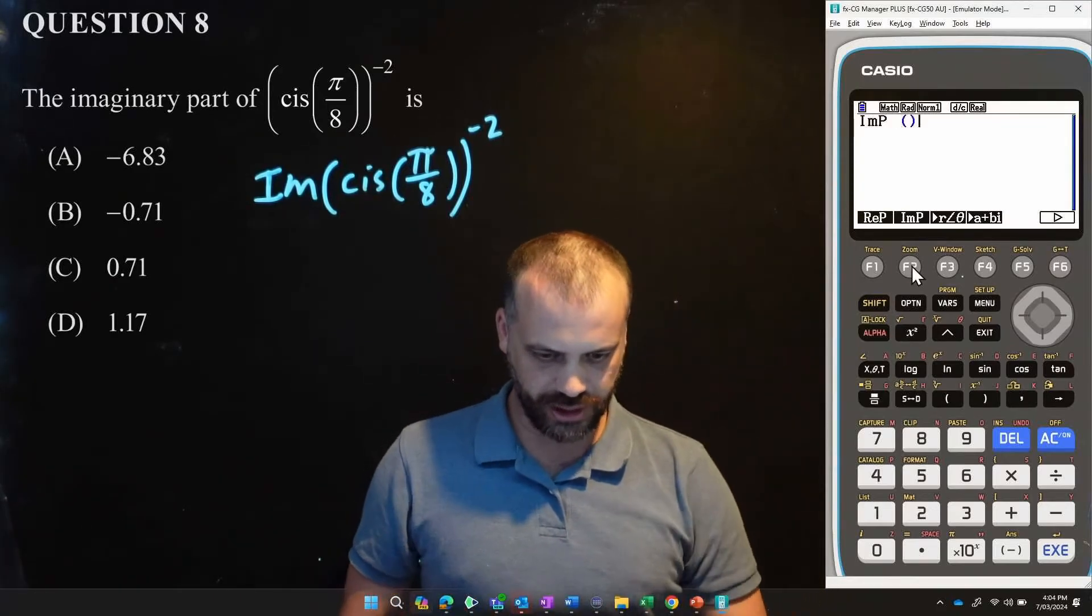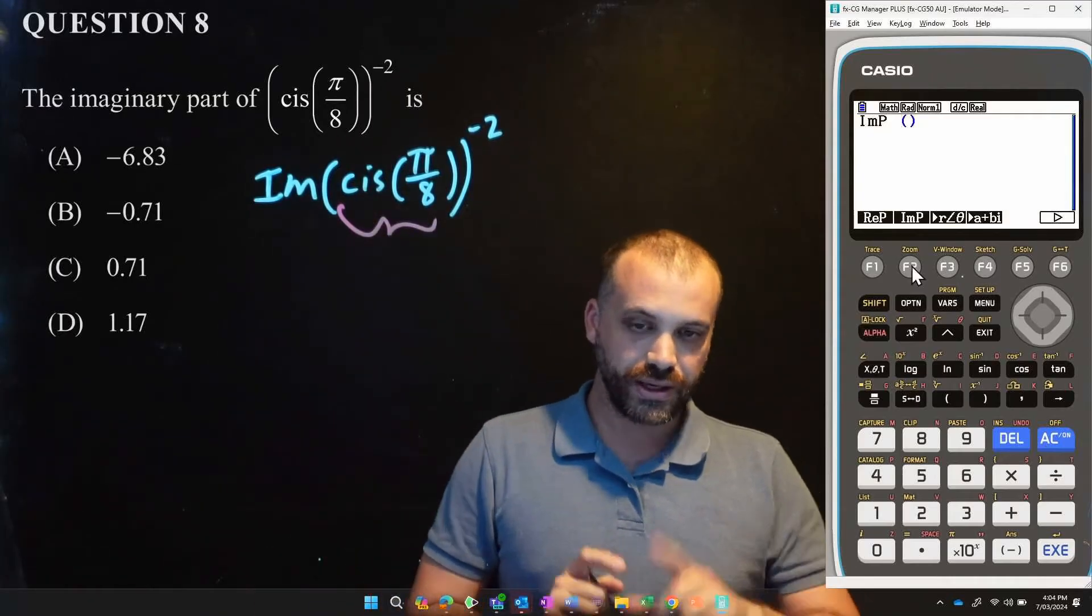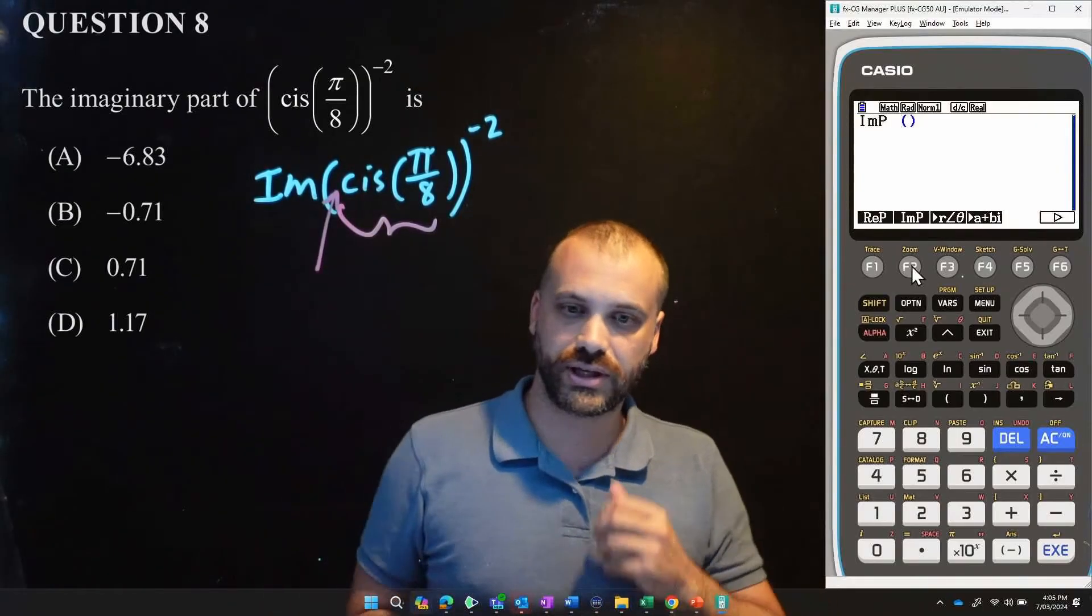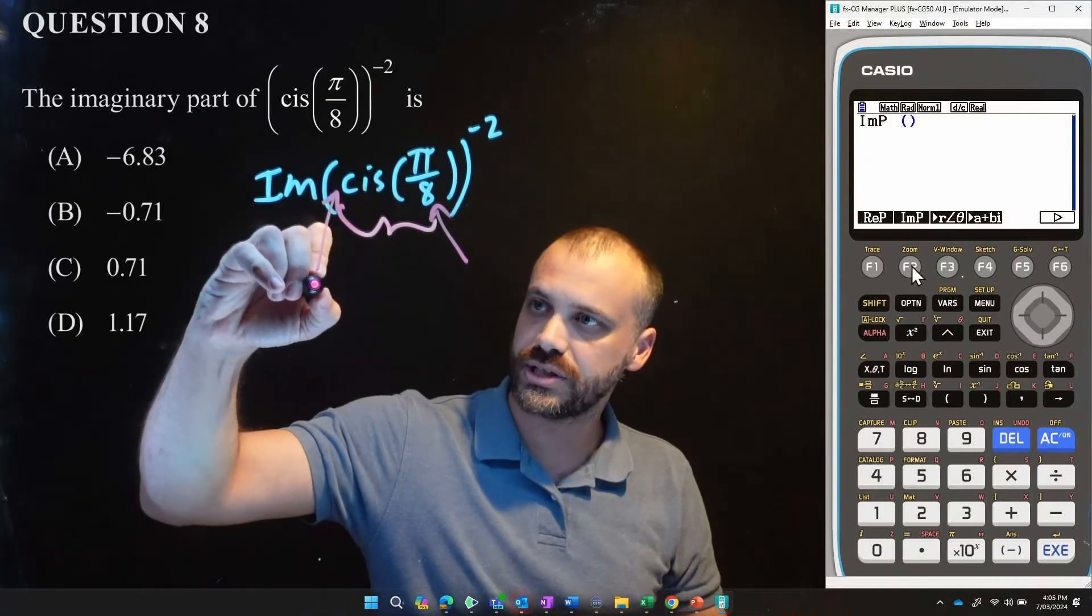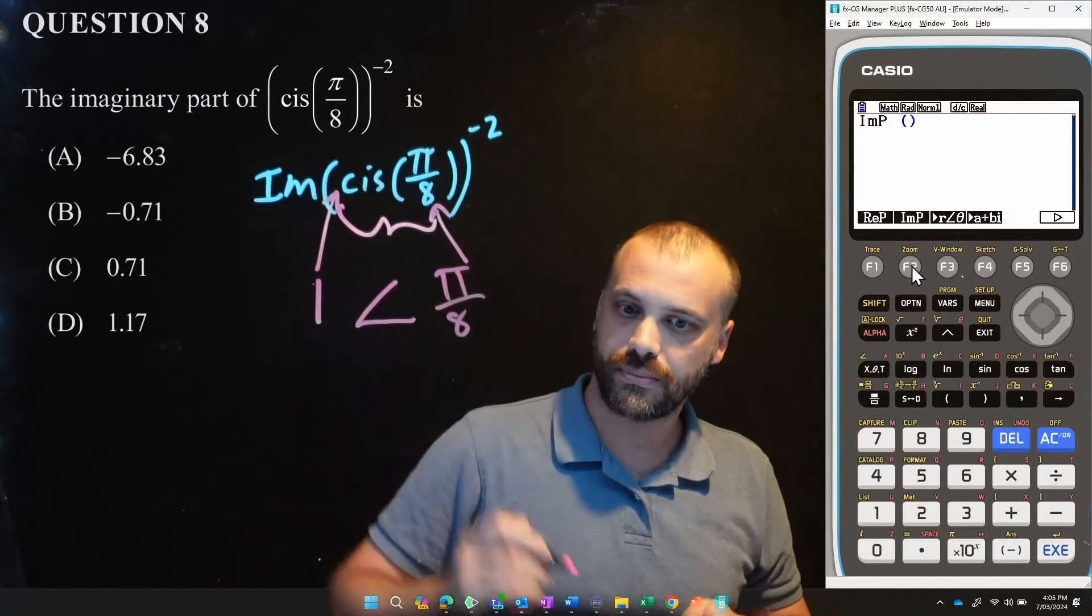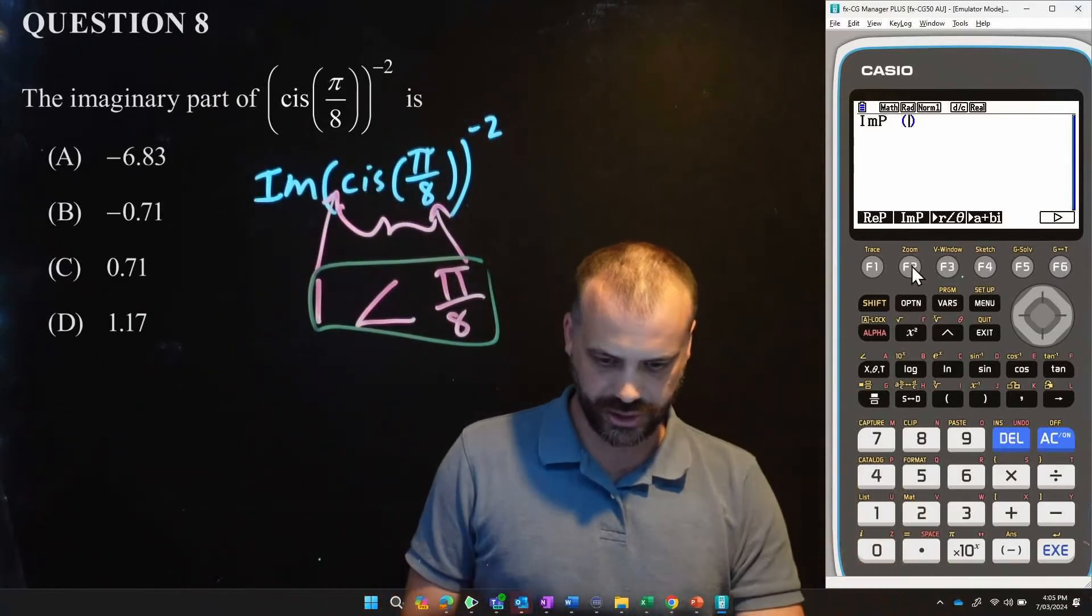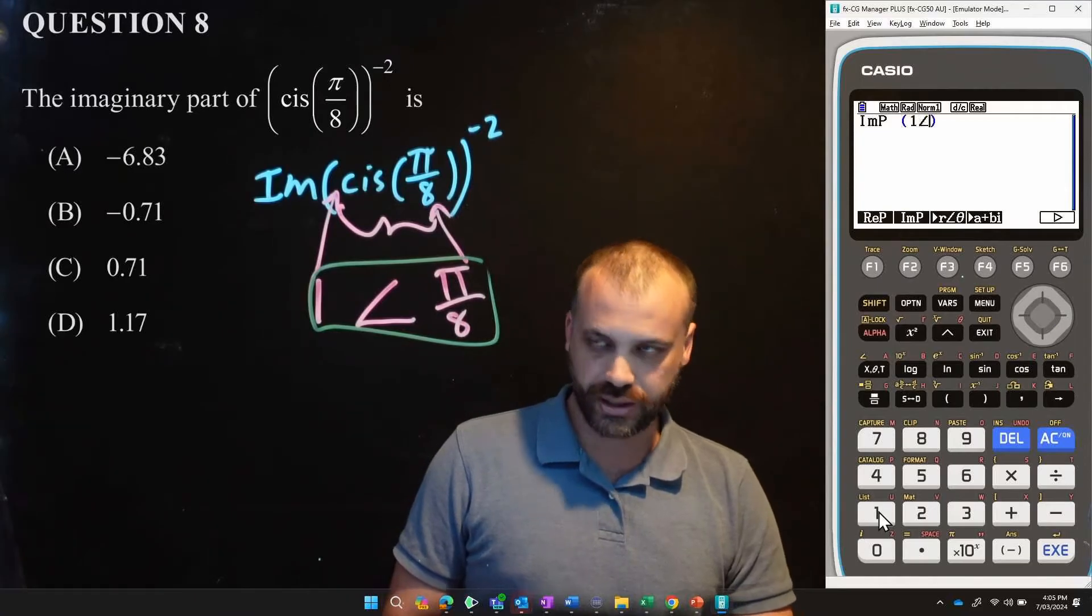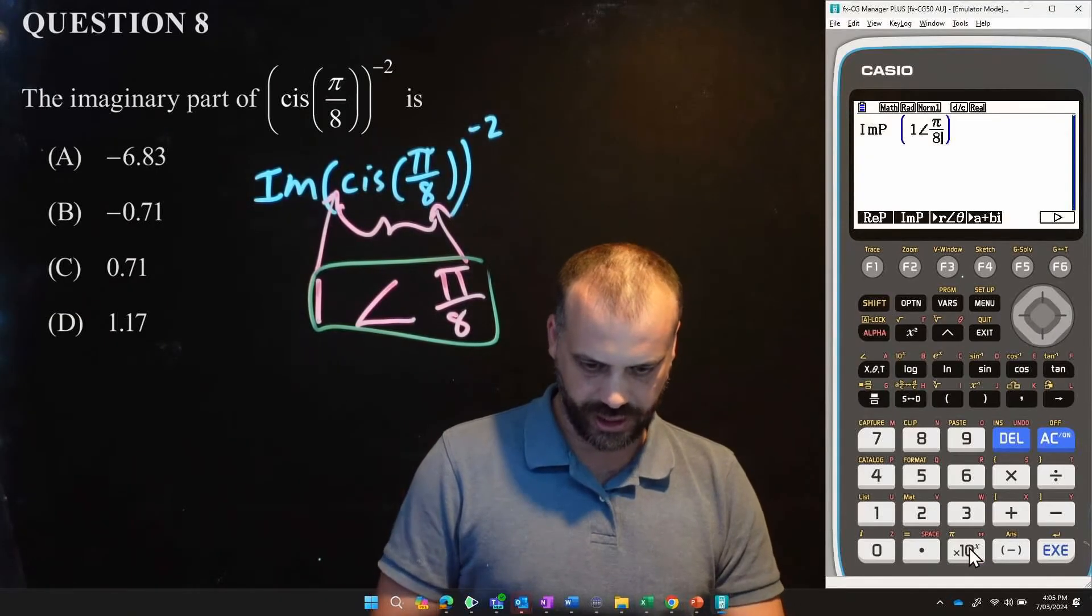So, we want to do a calculation on a complex number. So, calculations tend to hide in options. So, we get options. There's our complex number there. Alright. Now, what do I want to find? I want to find the imaginary part. So, I just arrow it across. Alright. That's going to help me find the imaginary part. I'm going to enter a pair of brackets in there. I'm going to put this cis pi on 8 into my calculator. Now, your calculator doesn't have a cis button. That's not how it works. What you do is you tell your calculator what the modulus is, and you tell your calculator what the argument is. Now, the modulus is 1. The magnitude, if you like, is 1. And then we're going to use an angle symbol. And then our argument is pi on 8.